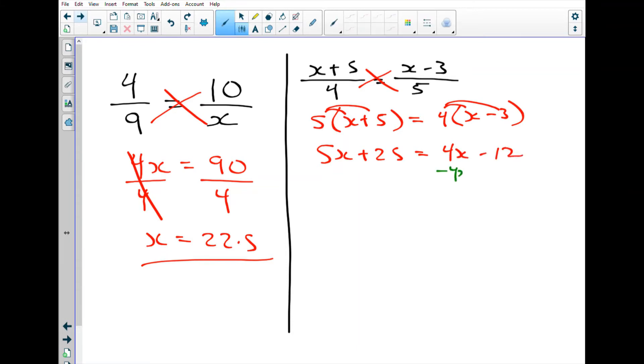Some simple algebra in terms of gathering terms. This will give us 1x plus 25 equals negative 12. And simply remove 25 from both sides, and you get x equals the result, which is negative 37.